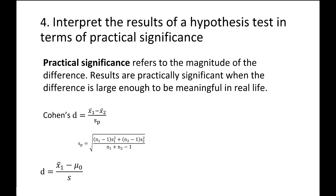That was an example for the difference in two means. The formula for one sample mean is similar. For proportions, you can just look at the difference and judge whether it's meaningful given the scenario. For correlations and regression, you can compute R squared — that's Pearson's R squared — which represents the proportion of variance shared between the two variables. We'll learn more about that in Lesson 12 when we cover correlation and simple linear regression.